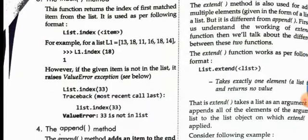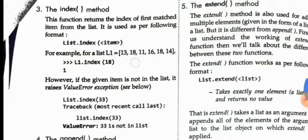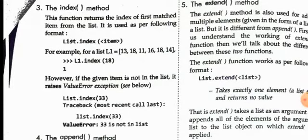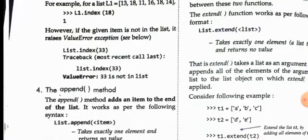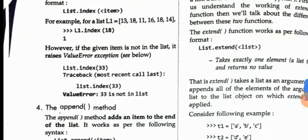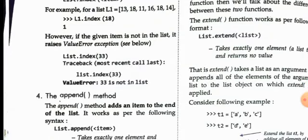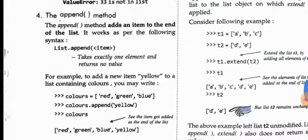The index() method provides the index of a particular element. For example, with the list [13, 18, 11, 16, 18, 14], writing l1.index(18) returns 1, because 18 first appears at index 1. If you try to find the index of an element not present in the list — such as 33 — it will show an error.